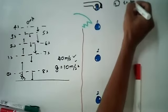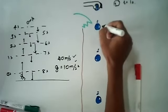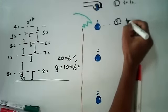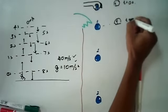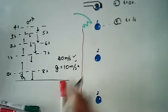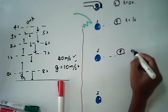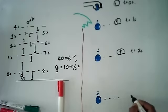At the start, t is equal to zero seconds. As the object falls, the timer moves to t equals one second, then to t equals two seconds, and further down to t equals three seconds.